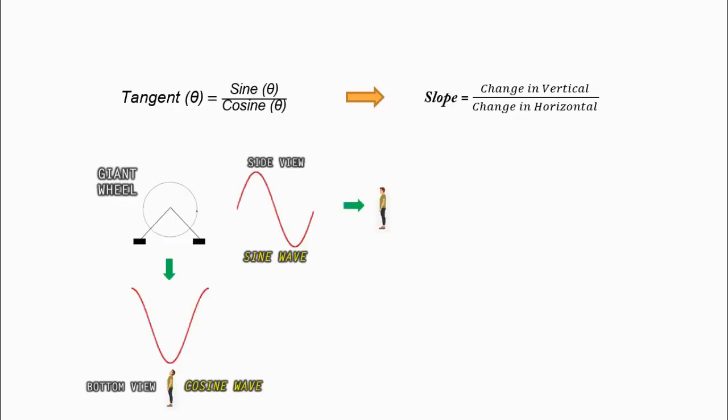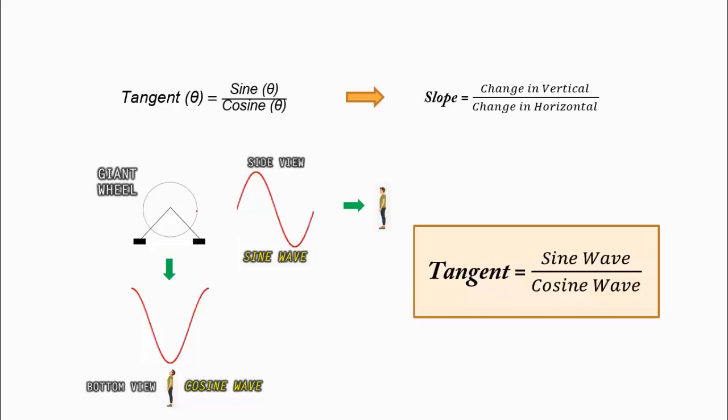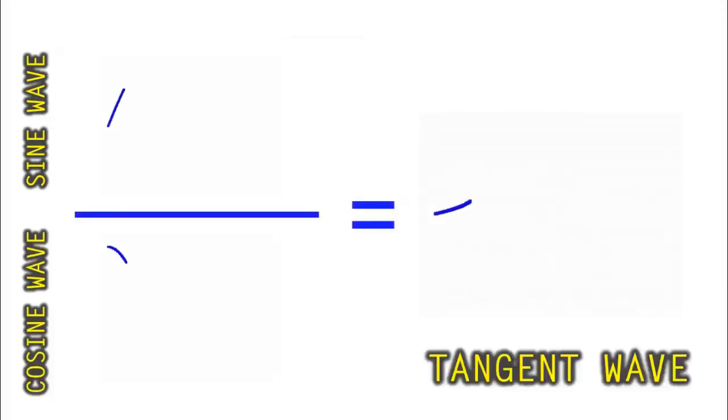Going back to the equation for tangent wave you always memorized, I told you the slope is actually change in the vertical divided by the change in the horizontal. Now, if you remember my sine and cosine wave videos, the sine wave is actually showing you the vertical change. And the cosine is showing you the horizontal change. So if you divide them, you just end up with the tangent wave. And if you want to see this in action, a sine wave divided by a cosine wave equals a tangent wave. Take a look.